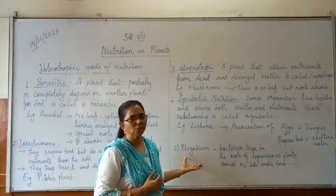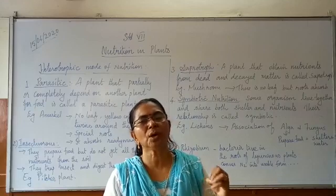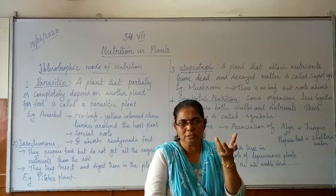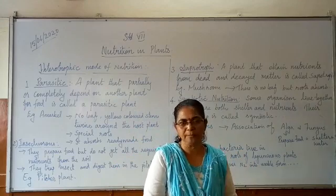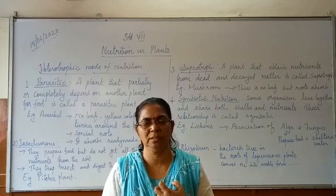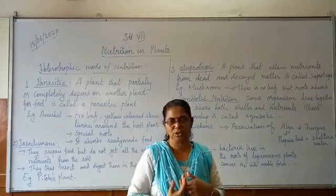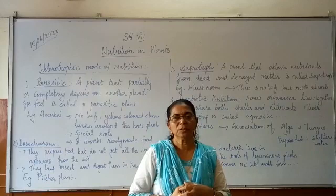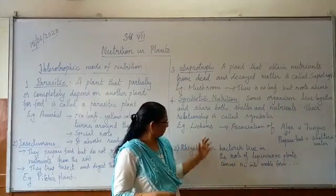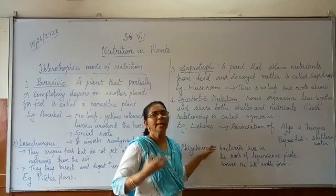Another example is rhizobium bacteria. Rhizobium bacteria is a type of bacteria which lives in the root nodules of leguminous plants, for example peas and pulses. For the healthy growth of the plant, they need nitrogen. Nitrogen is present in the atmosphere, and this rhizobium bacteria converts nitrogen into a soluble form. When it becomes soluble, it mixes in the soil and the leguminous plants absorb this nitrogen and grow.